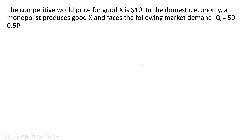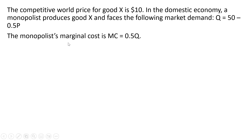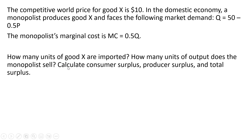The competitive world price for good X is $10. In the domestic economy, a monopolist produces good X and faces the following market demand: Q equals 50 minus 0.5P, where P is the price. The monopolist marginal cost is given by the following equation. We want to know how many units of good X are imported, how many units does the monopolist sell, and we want to calculate the consumer surplus, producer surplus, and total surplus.